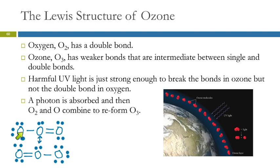So, in an ozone molecule, these bonds are actually like a one-and-a-half bond because it's an average of these two structures. In oxygen, you have a double bond.